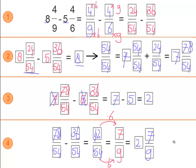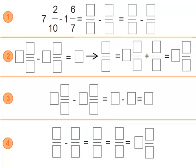Let's do one more to make sure you understand — it might take a long time but it will get faster as you learn. We have 7 and 2 tenths minus 1 and 6 sevenths. Let's first work with the fraction part: 2 over 10 minus 6 over 7. To make a common denominator: 10 times 7 and 7 times 10, which equals 70. Multiplying on top: 2 times 7 is 14 and 6 times 10 is 60.